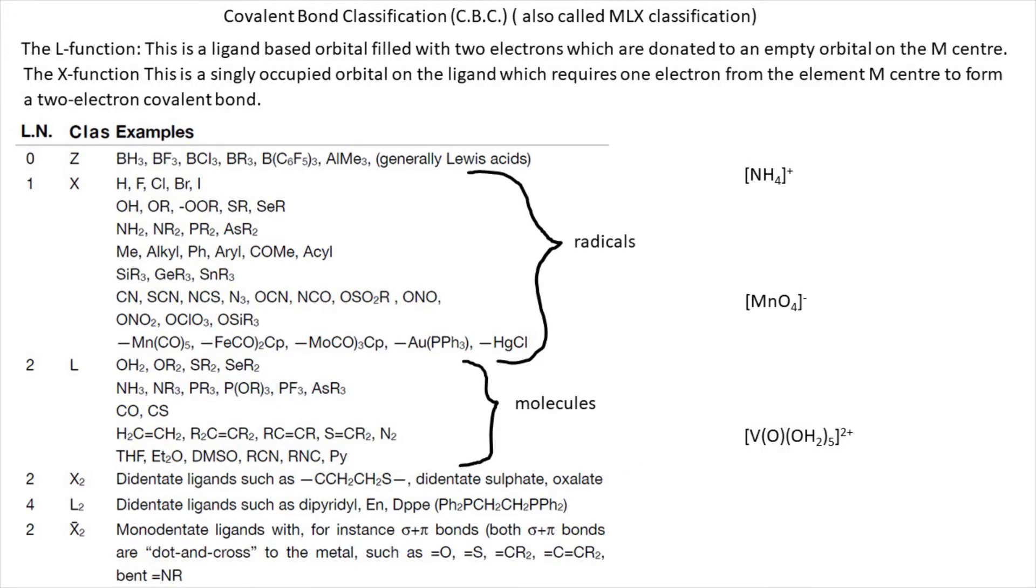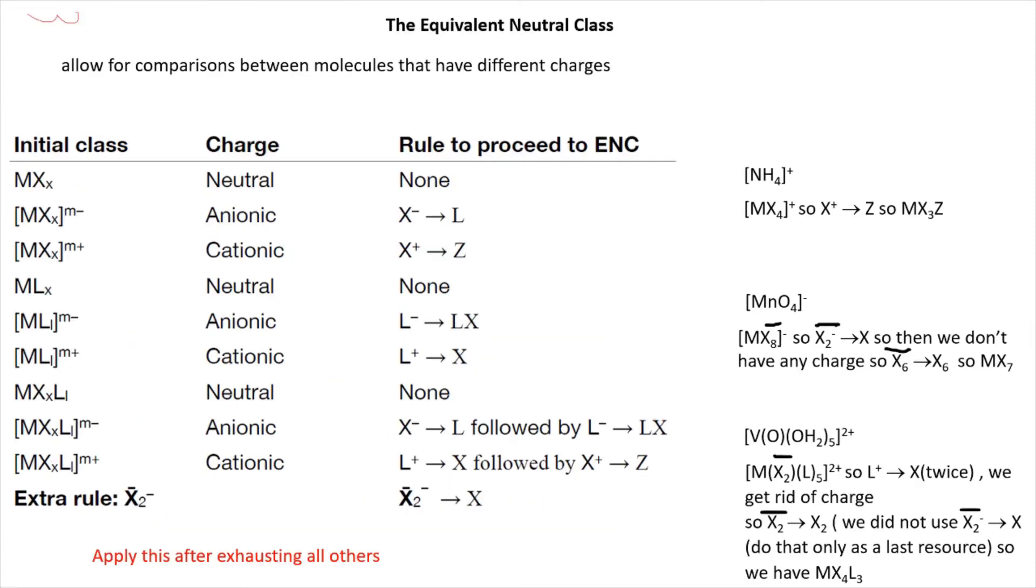Here we have some ions, and if you like you can assign MLX classification to them. That's the time to pause the video, otherwise I will show the answers. These are the answers, straight from the table. Just notice that the oxygen ligands in these ions are X2 bar. If you know how, please convert now the ions to neutral equivalents, that is, get rid of the charges.